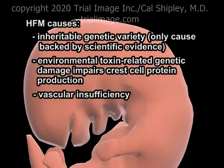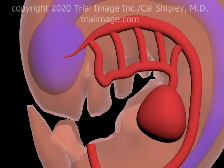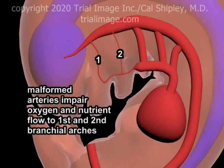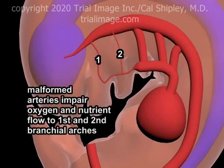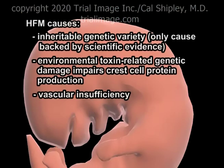Vascular insufficiency to the branchial arches has also been proposed as a possible cause of HFM. In this scenario, the dedicated arteries to the first and second branchial arches are severely underdeveloped, thus depriving the arches of the oxygen and nutrients required for normal facial structure formation and growth. Finally, physical trauma experienced during pregnancy has been proposed as a possible cause of HFM.